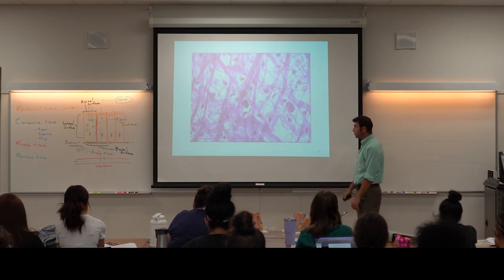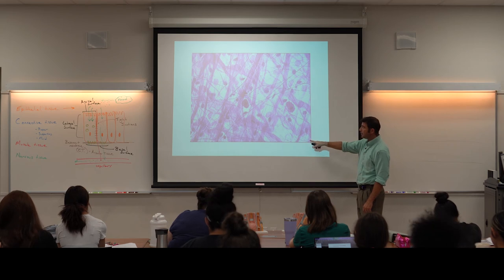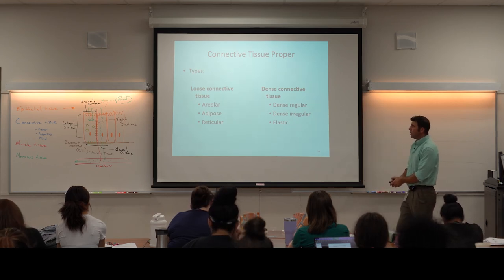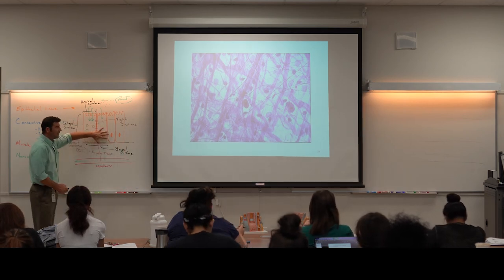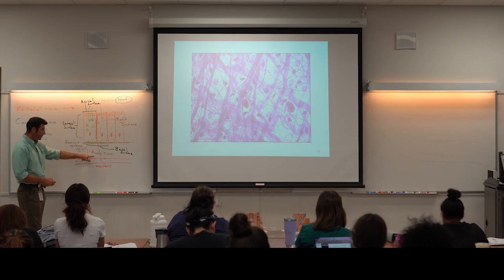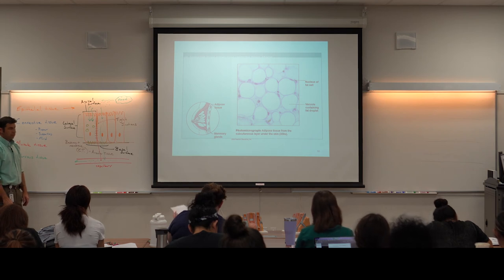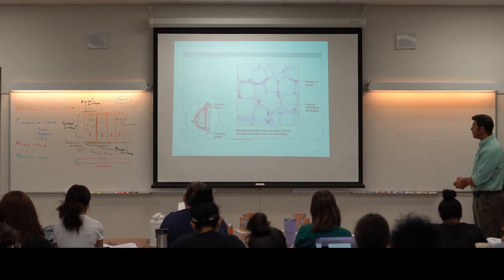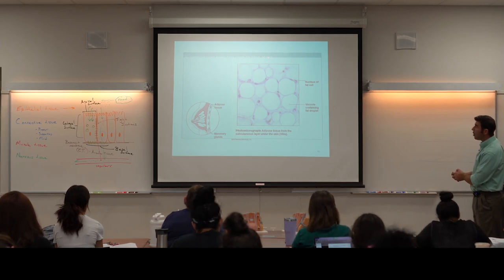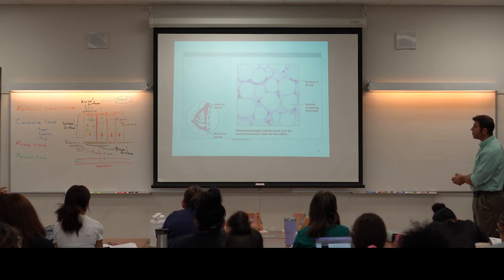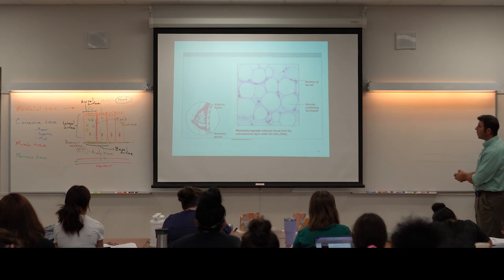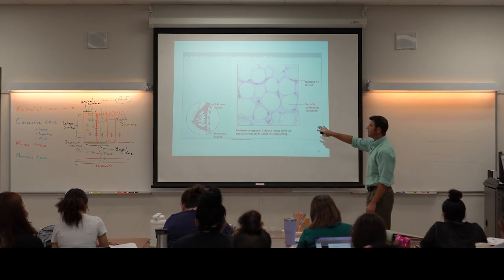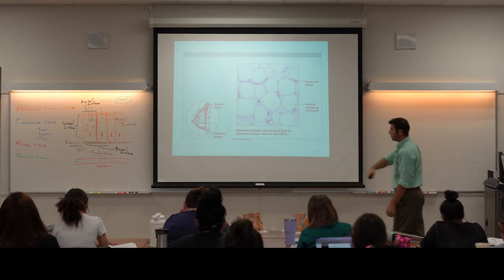Let's start with loose connective tissue. The image under the microscope looks like this — we'll call this areolar tissue, the most common type of loose connective tissue. All epithelial tissue is anchored down to this type of connective tissue. The next type is adipose tissue — these large vacant spots are a dead giveaway that we're looking at adipose tissue. Typically triglycerides are stored here, which is why we said connective tissue is an energy storage tissue due to adipose.